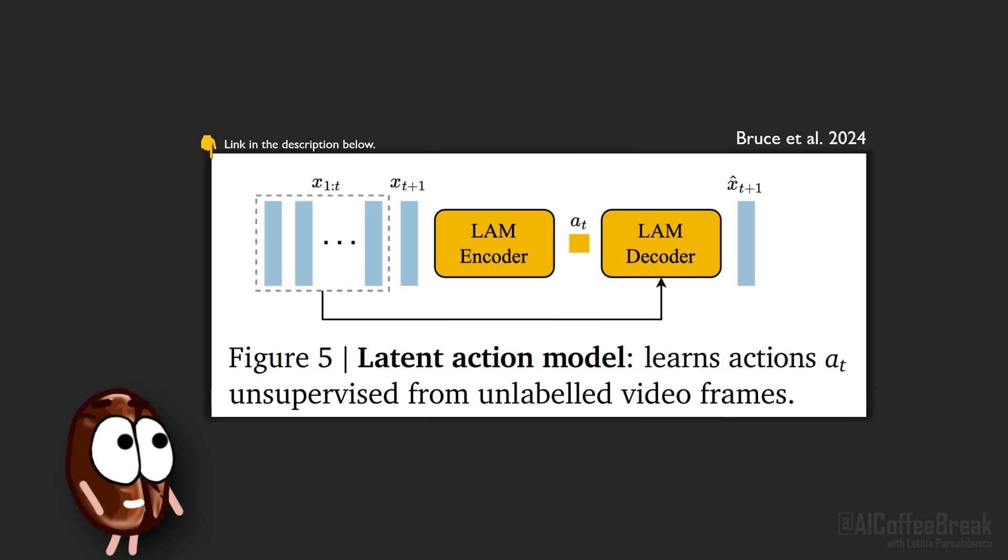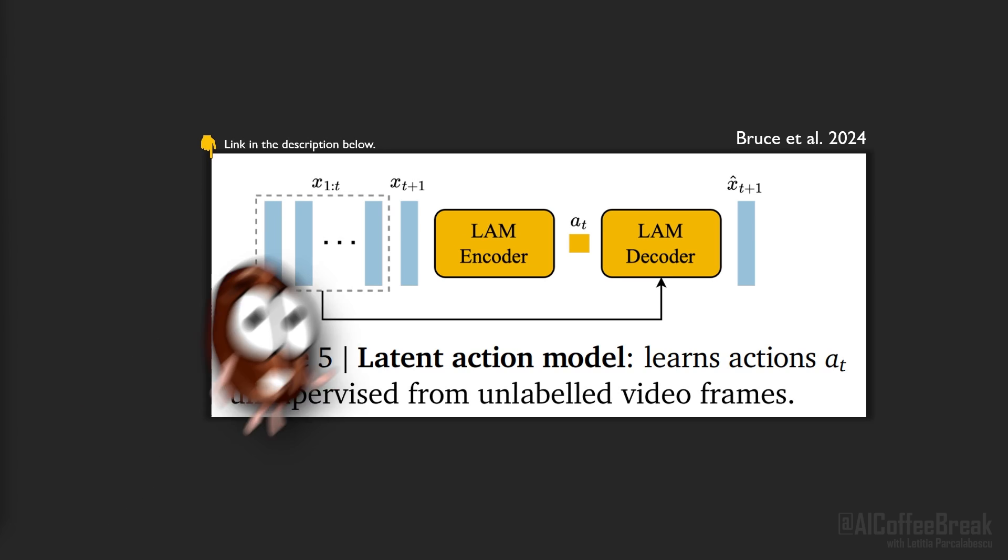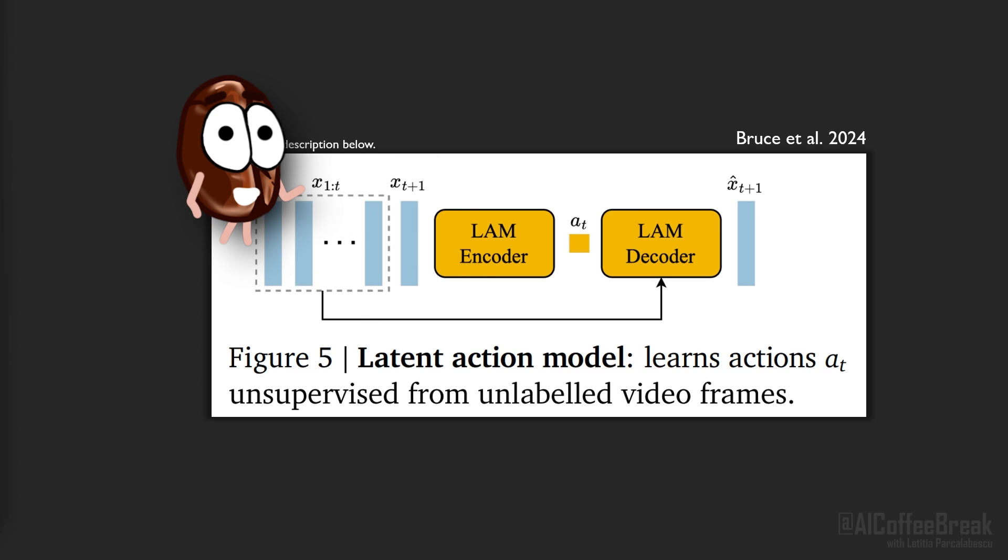Now how to model the actions that should come in for predicting the next frame, especially since action labels are rarely available in internet videos? There are some players who showed their controls while playing games, but the majority doesn't. So the authors decide to learn latent actions fully unsupervised.